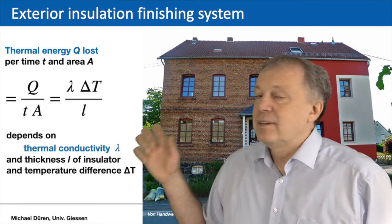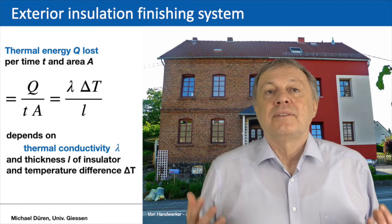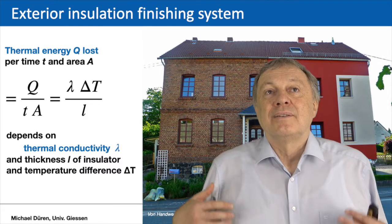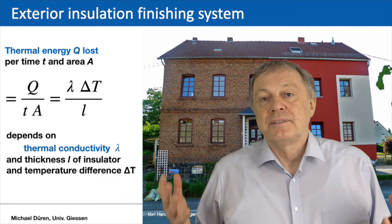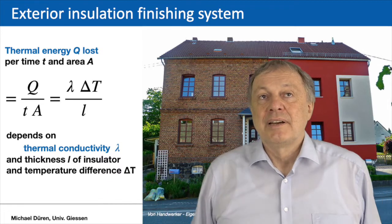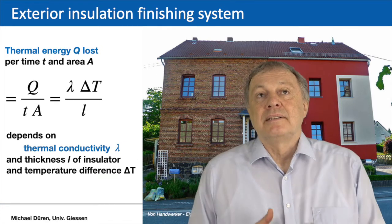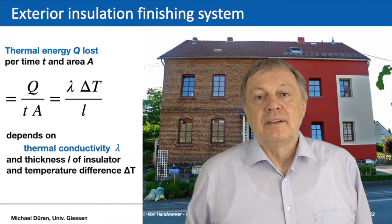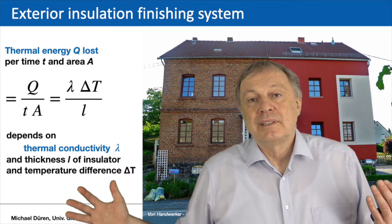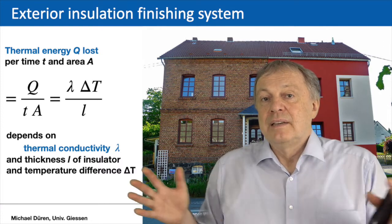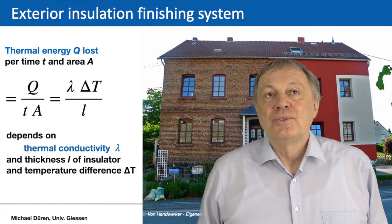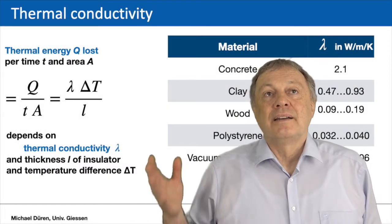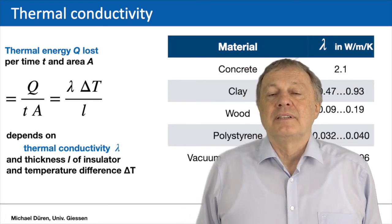If you do the right physics, the insulation of your wall is calculated according to the formula: the energy loss depends on what we call the thermal conductivity lambda of the insulating wall, divided by its thickness L, multiplied by the temperature difference between inside and outside. The colder it is outside the more energy you lose. The thicker your insulation the less you lose, and it depends on the material, quantified by the thermal conductivity lambda.